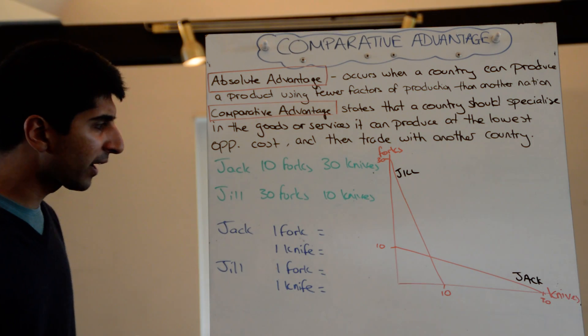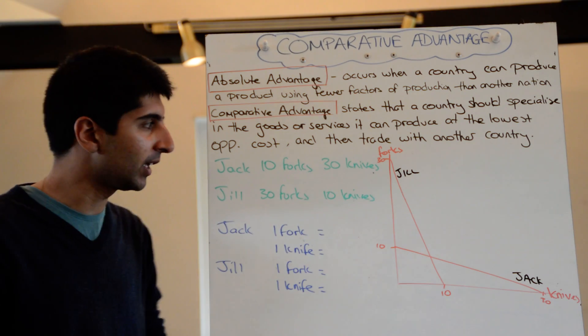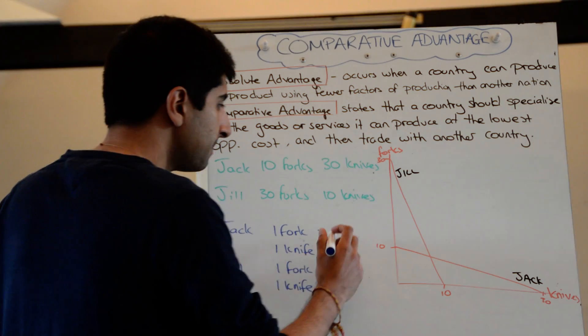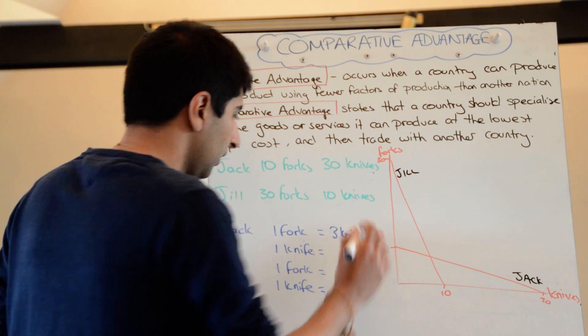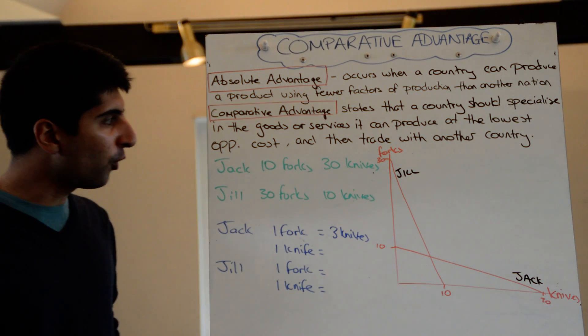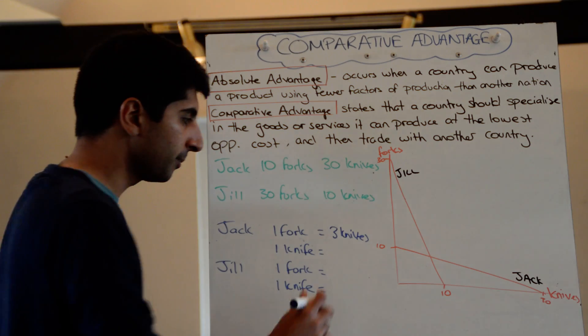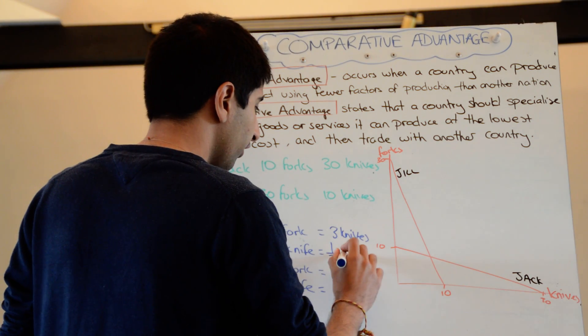Let's look at Jack. For Jack to produce one fork, how many knives does he have to give up? Divide both sides by 10, Jack has to give up 3 knives. To produce one knife how many forks does he have to give up? Divide both sides by 30, he needs to give up 1 third of a fork.